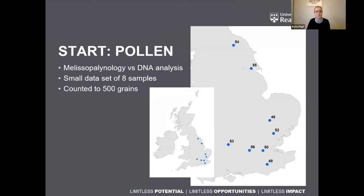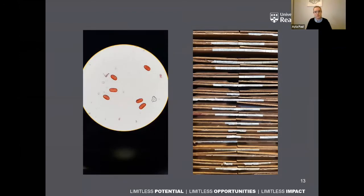She had very detailed analysis of her honey samples, and we were able to get the exact same samples counted for the pollen as well using traditional microscope. It's much more detailed information than the national honey monitoring scheme sends out, which is why we stuck to these eight for this small comparison. These samples were all counted through the microscope up to 500 grains to then compare to the DNA analysis. The slides were all counted by Susie Richer using her vast knowledge and experience as an environmental archaeologist who specializes in pollen analysis.